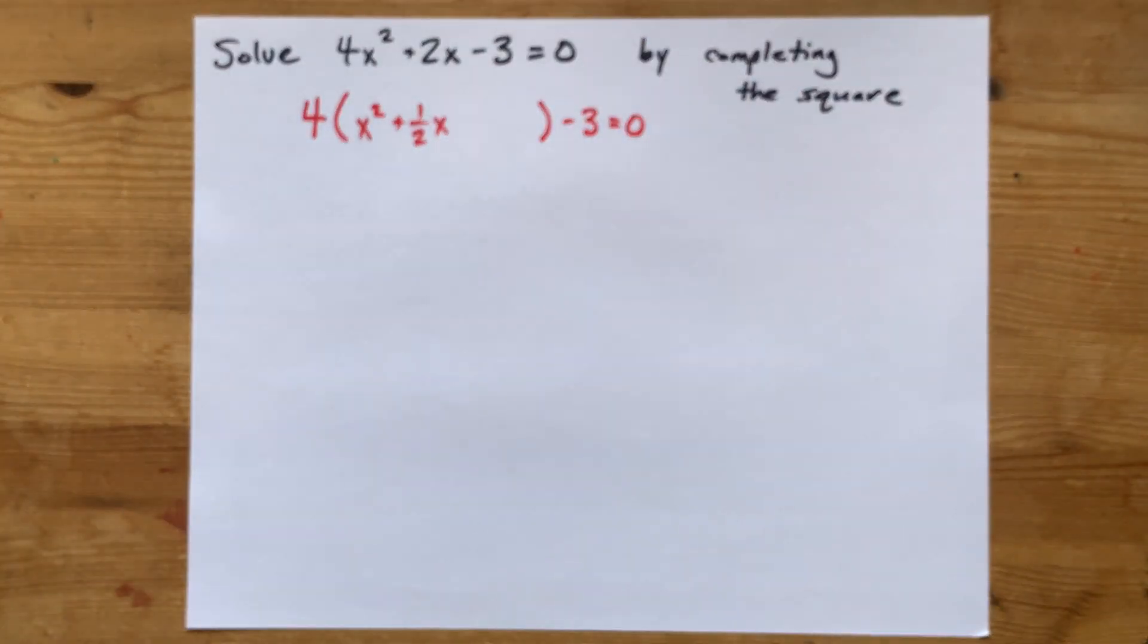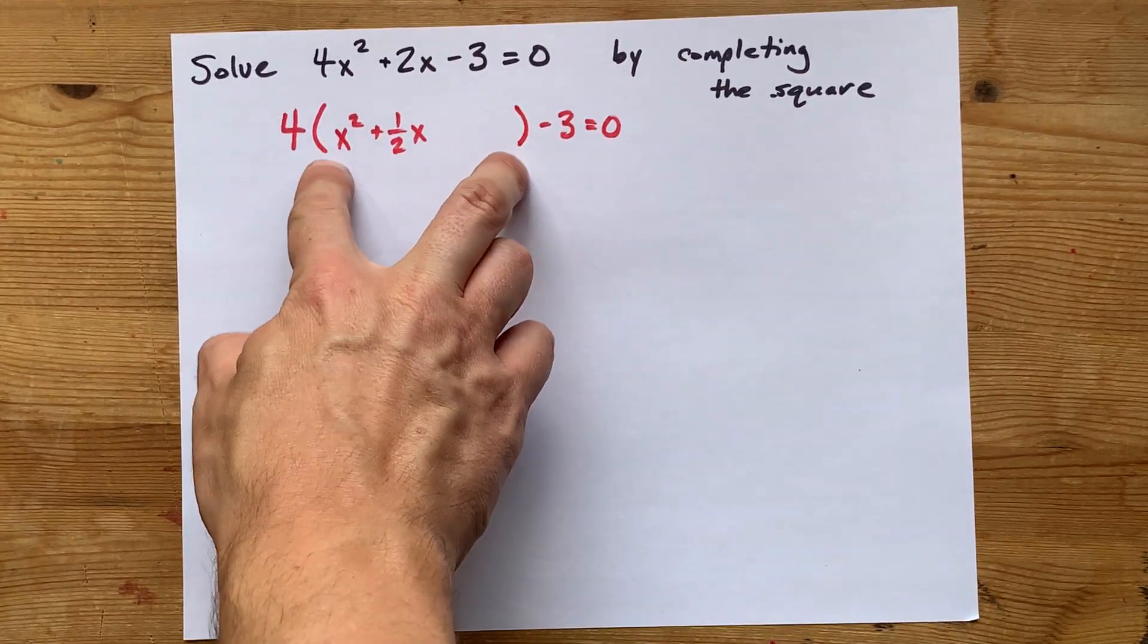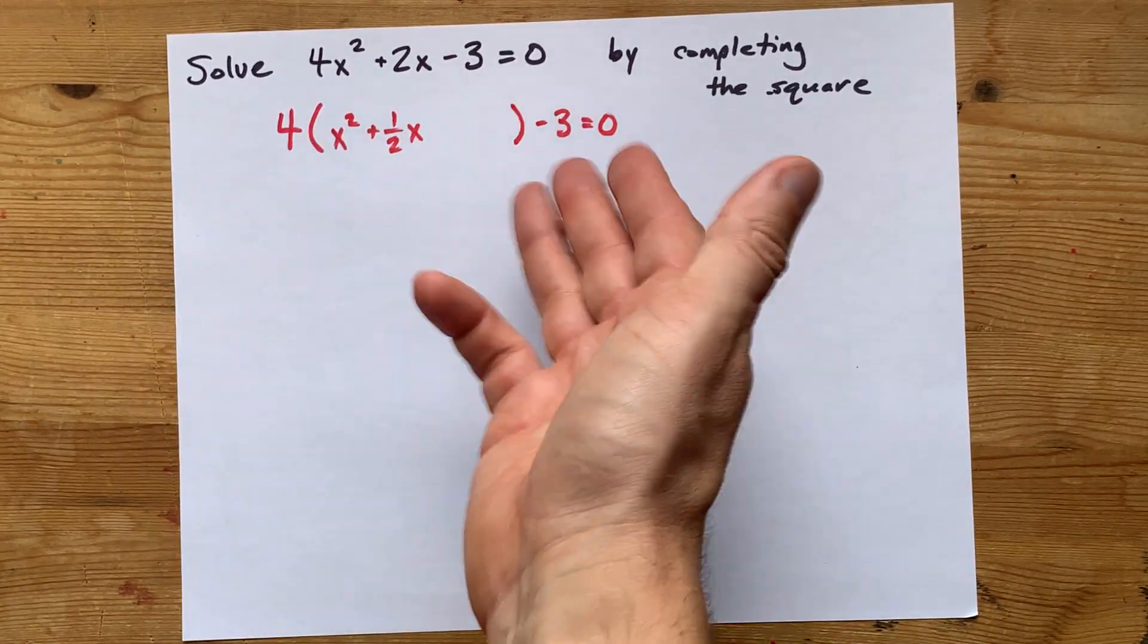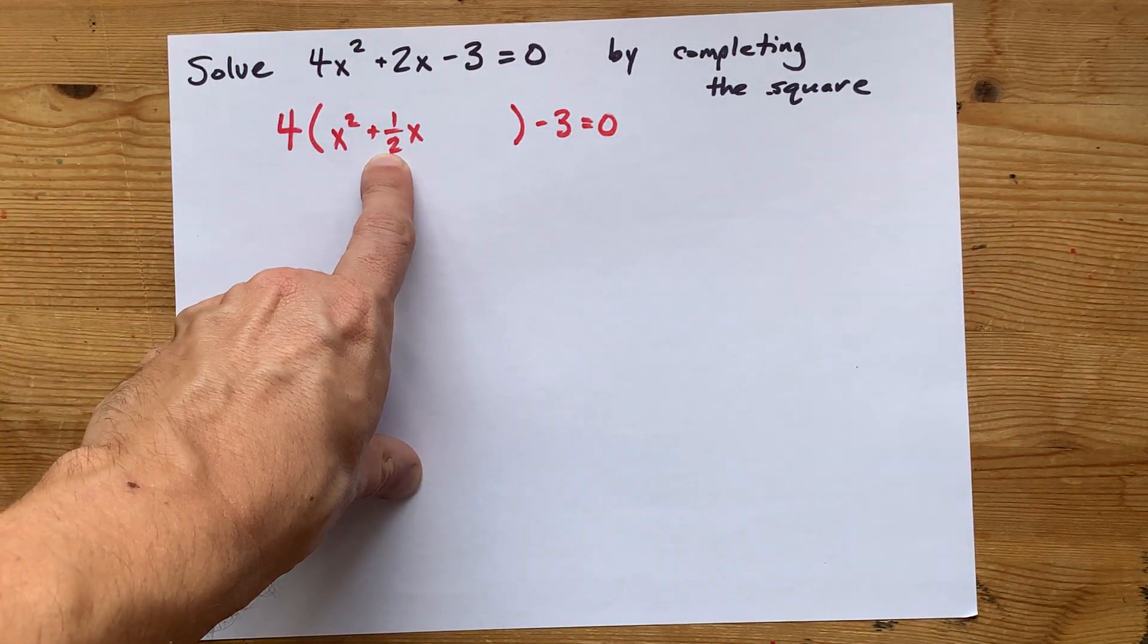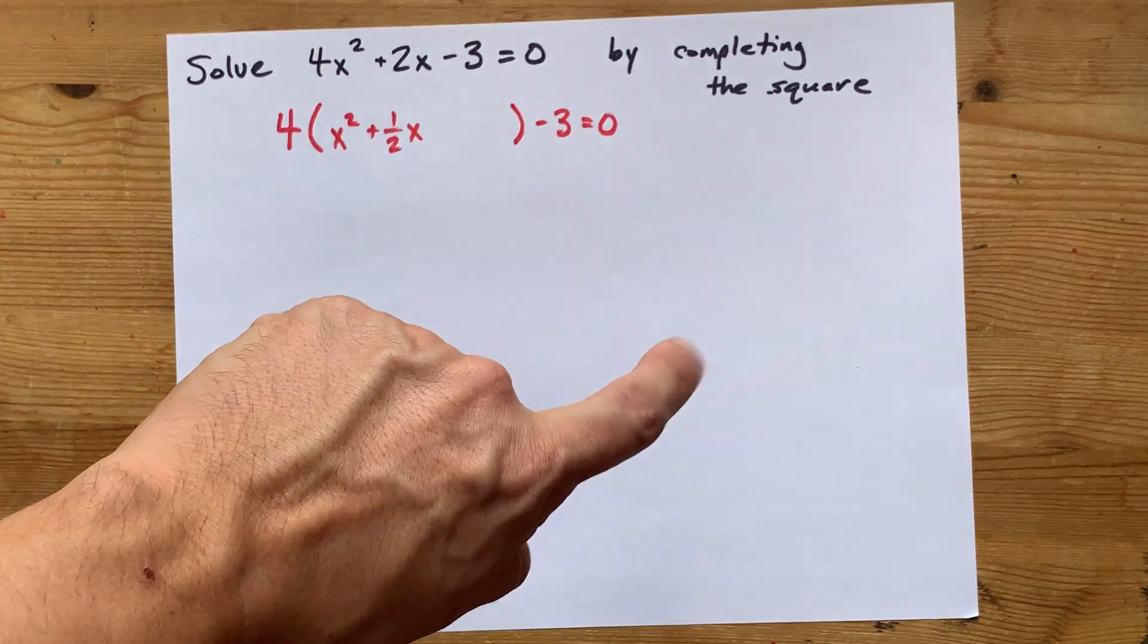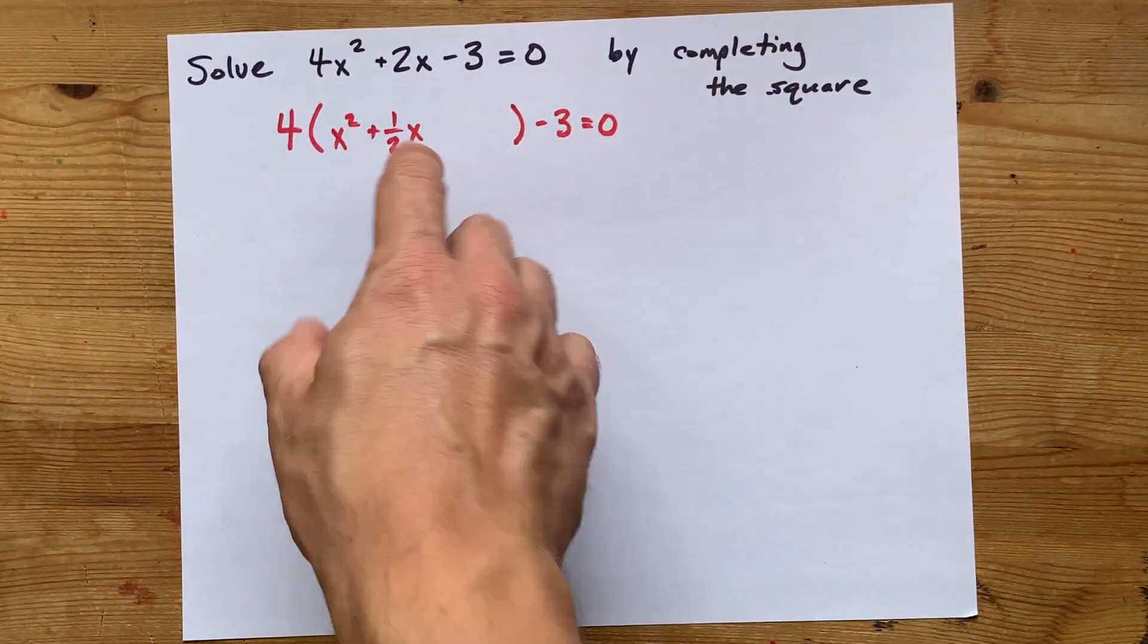Now comes the completing the square part. We're going to need some magic number that will turn this into a perfect square trinomial plus or minus some other amount. That magic number is going to be half of this, half of a half is a quarter, squared. Half this number, squared.